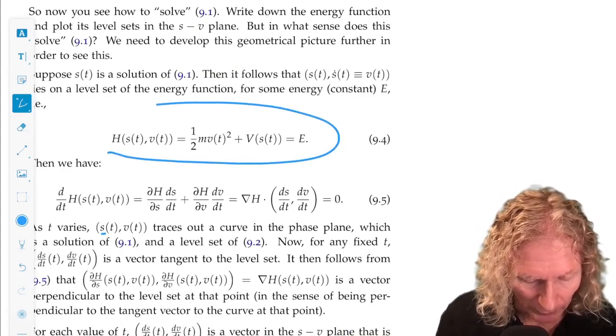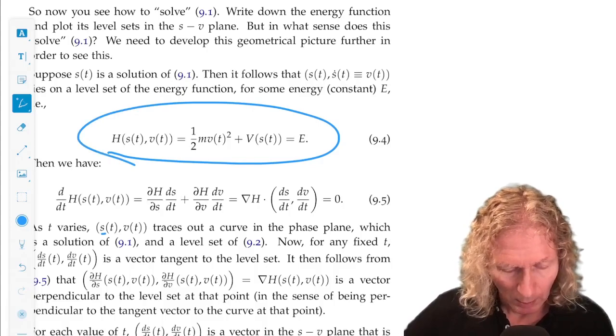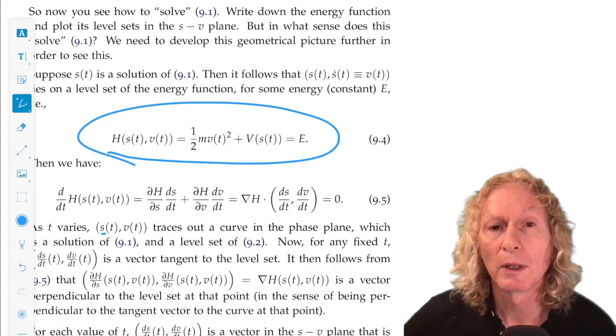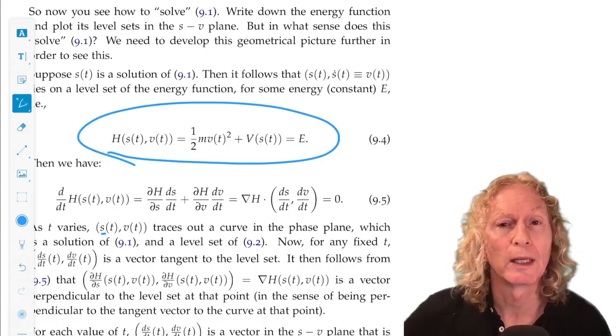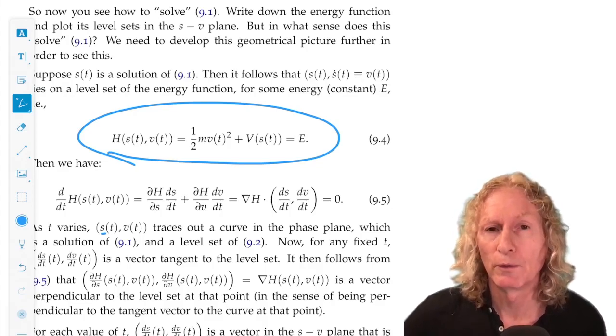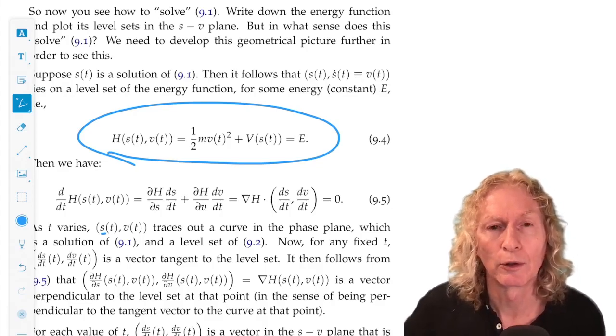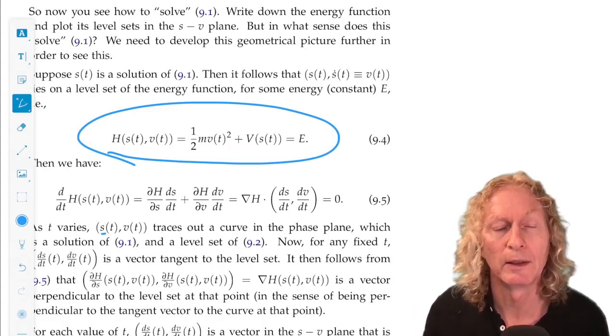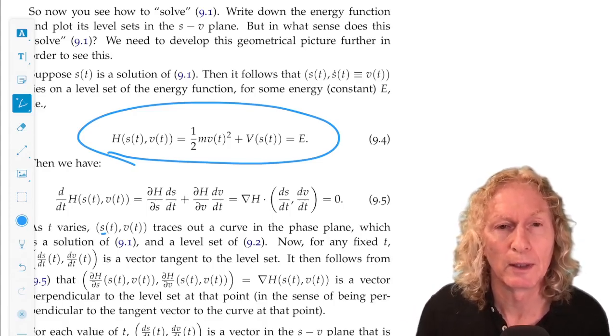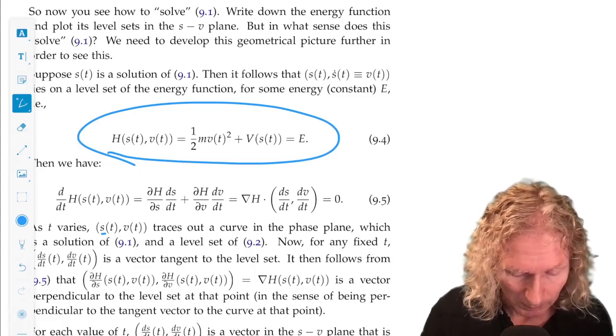Remember, this is the energy function: 1/2 mv² + V(s) = E. And we want to fix a value of E and plot the corresponding level curve in the phase plane, the vs plane or sv plane.